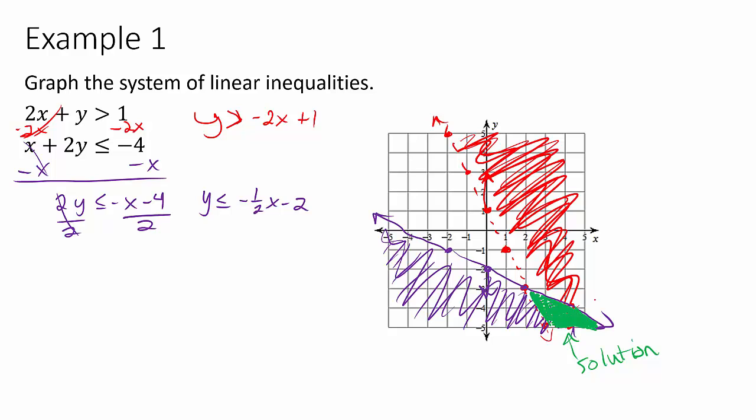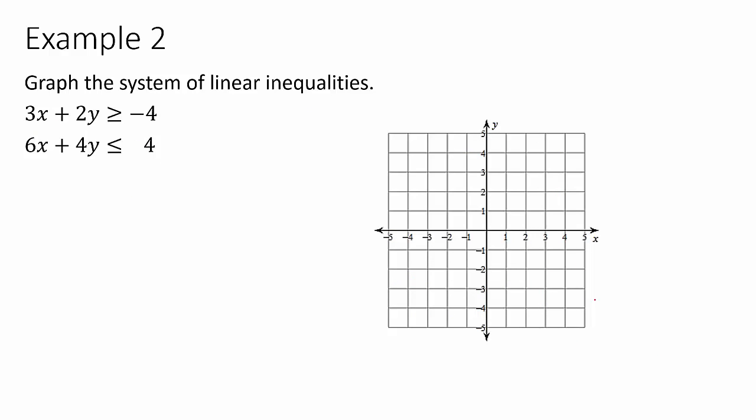So, example two, we're going to solve for y. And we get 2y is greater than or equal to negative 3x minus 4. We're going to divide both sides by 2 and get y is greater than or equal to negative 3 halves x minus 2. Start at negative 2 and go down 3, right 2. Remember, slope, rise over run. And negative makes one of the numbers negative, not both of them. This is a solid line. And we want to shade greater than, which is this way.